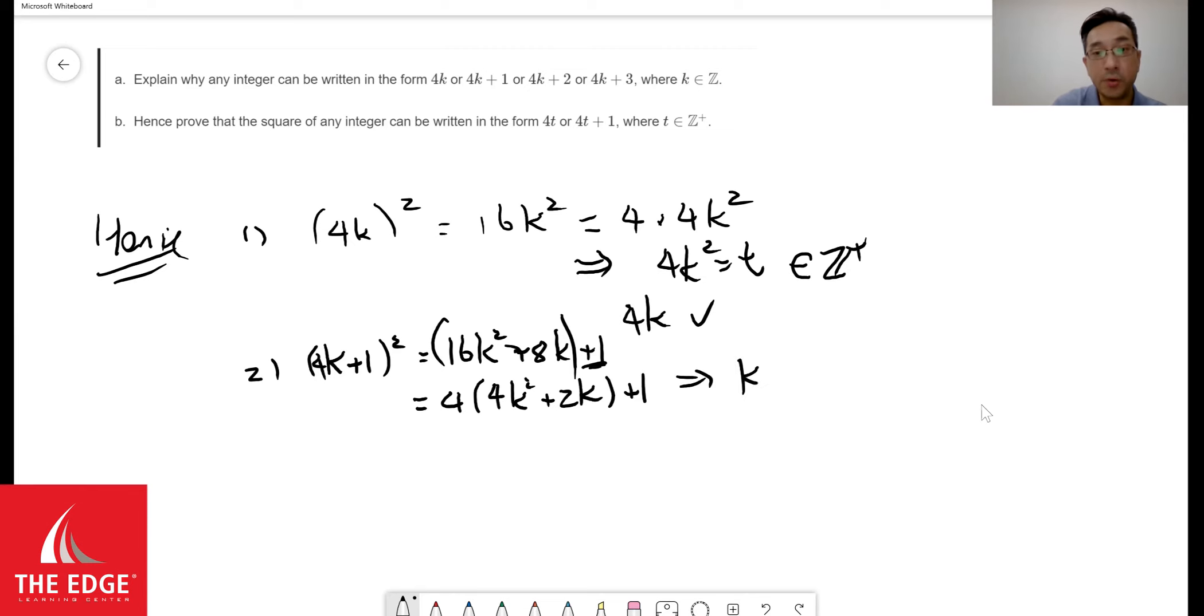So again, if I assume that 4k squared plus 2k can be written as some t, which again we can tell that it is some kind of integer, then we also have some kind of 4t plus 1. So that also worked.